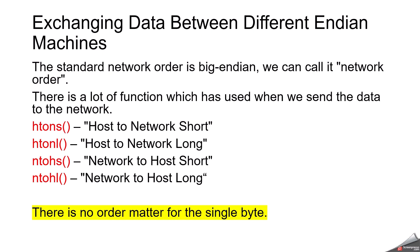An important point: there is no byte-order concern for a single byte. For example, consider two machines — machine one is big-endian and machine two is little-endian. If machine one wants to transfer 0x12345678, it first calls htonl, which ensures the MSB is at the lower address in network order. When machine two receives the data, it calls ntohl, which reverses the byte order to match little-endian representation, giving the correct value.